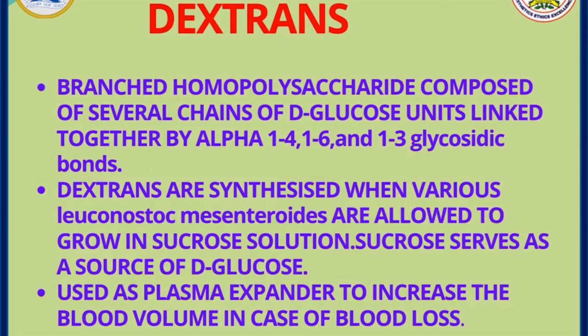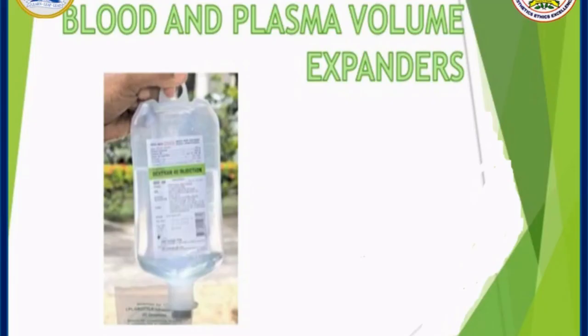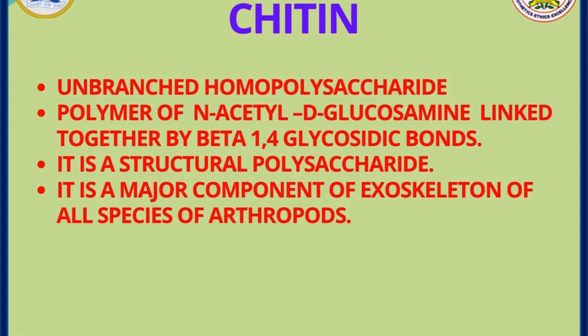Dextrin is a complex branched glucan composed of glucose linked by 1,4, 1,6, and 1,3 glycosidic bonds. They are synthesized when certain bacteria are allowed to grow in sucrose solution, which serves as a source of D-glucose. Cariogenic bacteria use dextrin to enable the formation of plaque, leading to dental caries. Dextrins are also used as plasma volume expanders to increase blood volume in cases of blood loss.